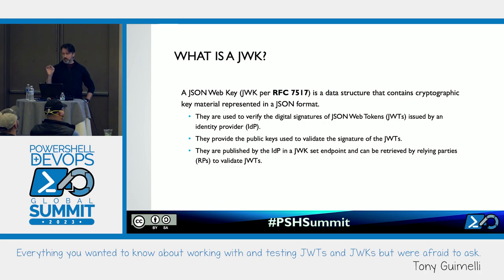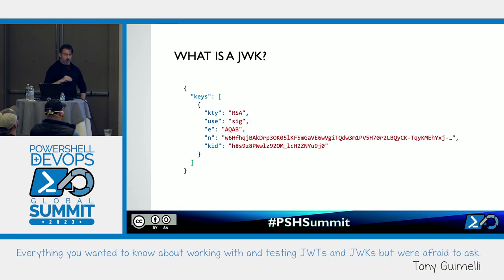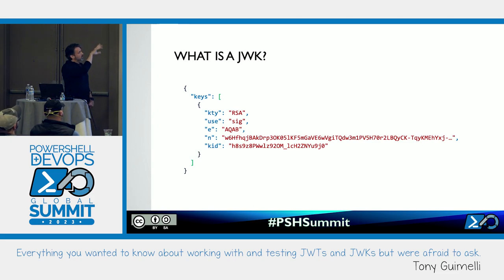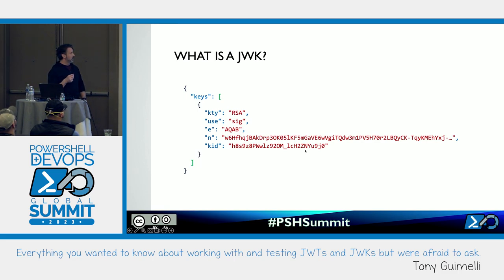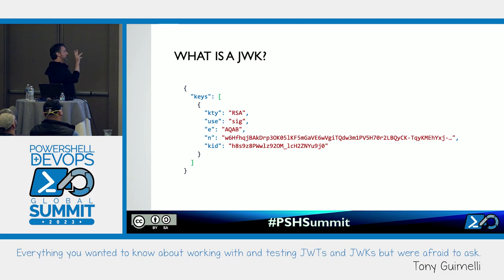The public key is typically retrieved at the identity provider in something called the JSON Web Key Set. I only have a single key in the set here, but the JSON array can hold multiple keys, uniquely identified by a key identifier. A typical JSON Web Key has key type KTY of RSA, usage of signature, and the exponent and modulus. Identity providers generally have multiple keys in a set for rollover, because certificate rollover has caused outages for many of us over the years.